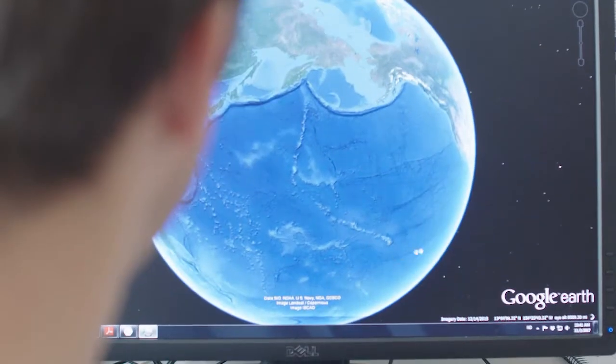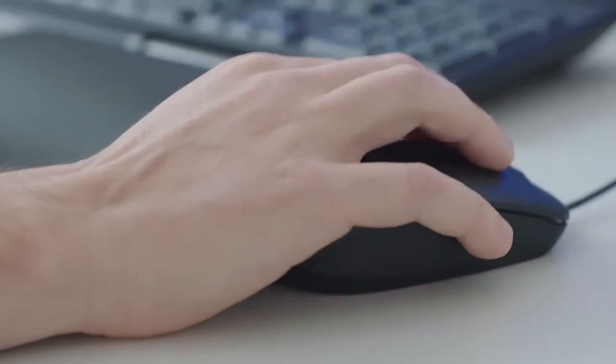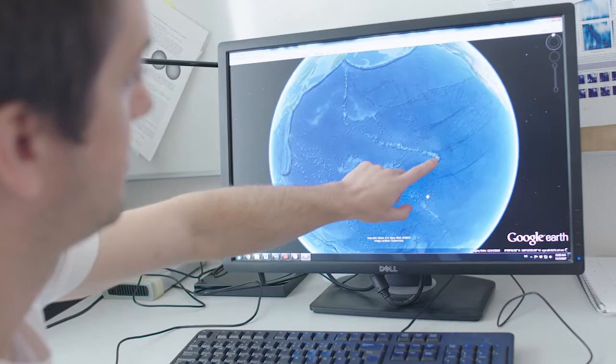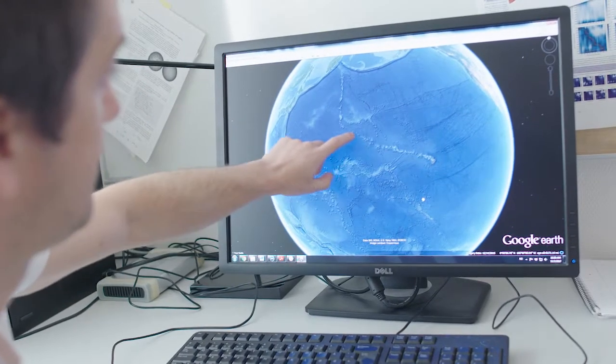So really we want to understand how and why the tectonic plates, the continents, the oceans, how they have moved to where they have been through Earth's history. This is one small piece of a much bigger puzzle of putting together Earth's tectonic history.